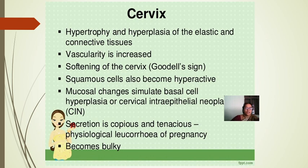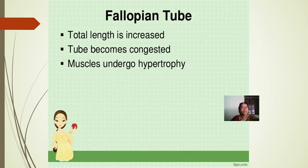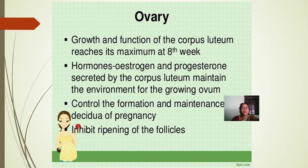Fallopian tube: the total length increases, the tube becomes congested, the muscles undergo hypertrophy, and the fallopian tube has no function during pregnancy. Ovary: the corpus luteum reaches maximum growth and function at the 8th week of gestation. Estrogen and progesterone secreted by the corpus luteum maintain a favorable environment for the growing embryo, control formation and maintenance of the decidua, and inhibit ripening of follicles.